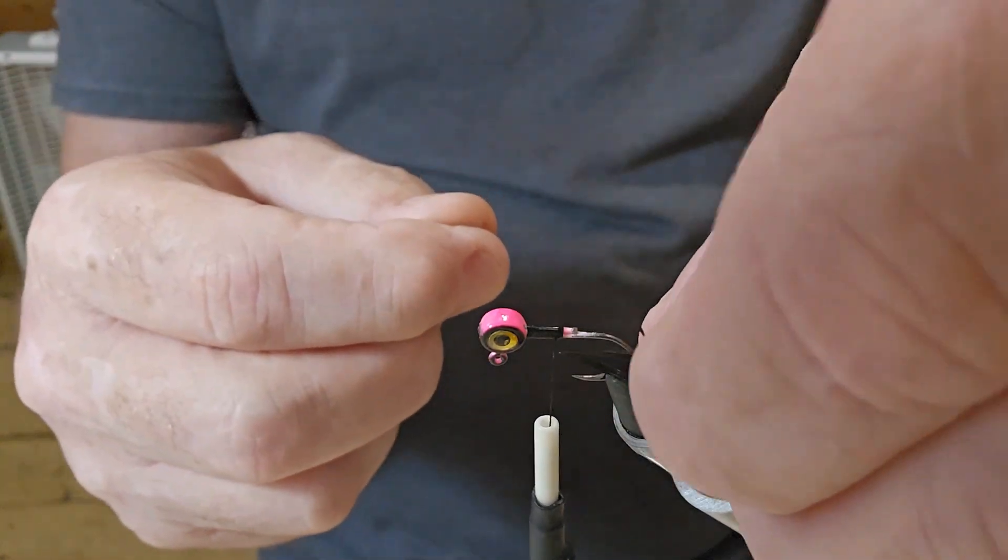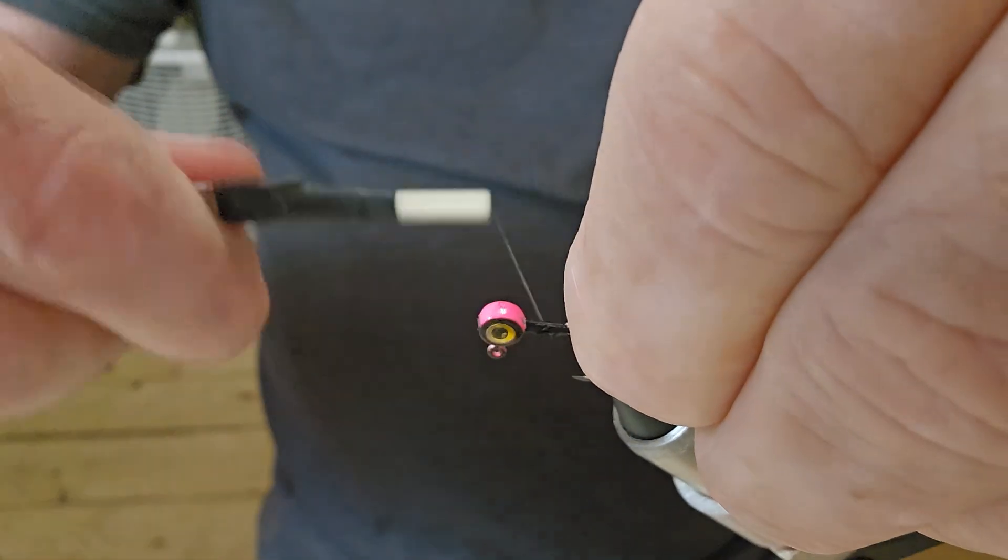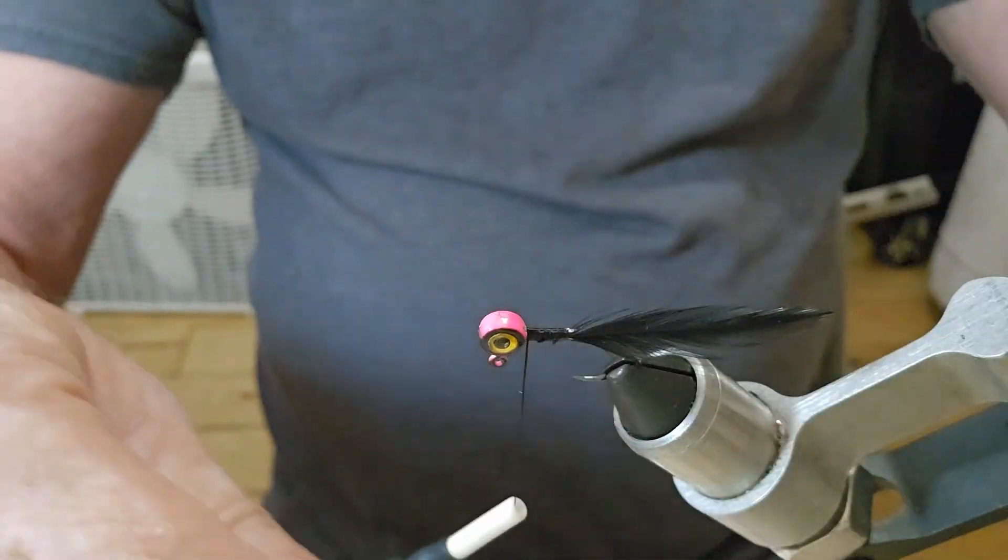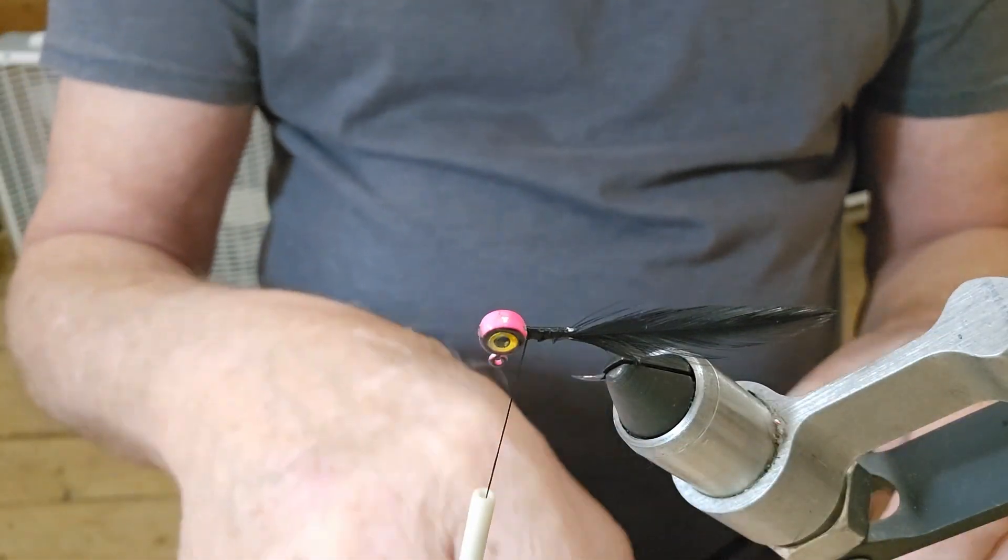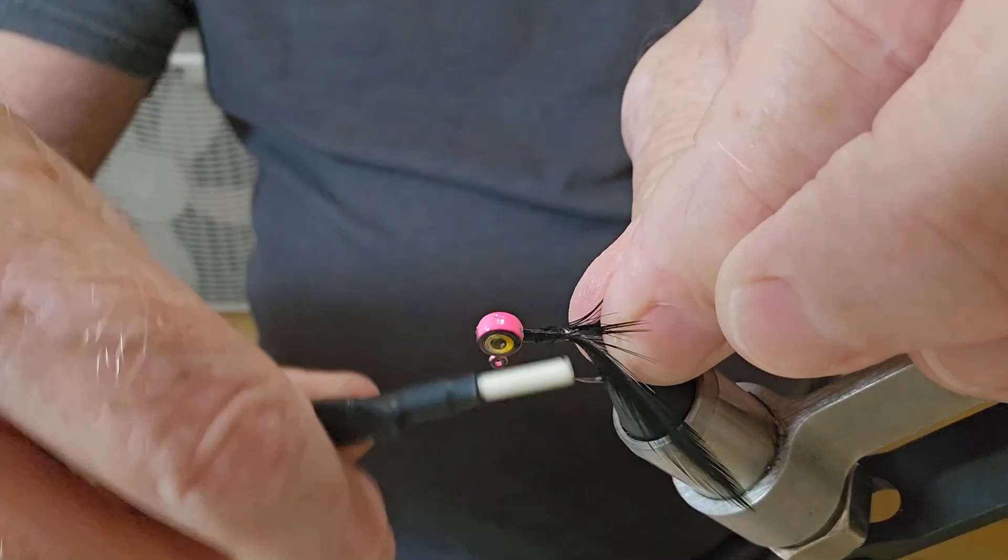So we've got one of our black ones, we're just going to come right over here on the bottom. Go ahead and tie it in. Then we'll get our other one, come right on this side of the hook and tie it in.